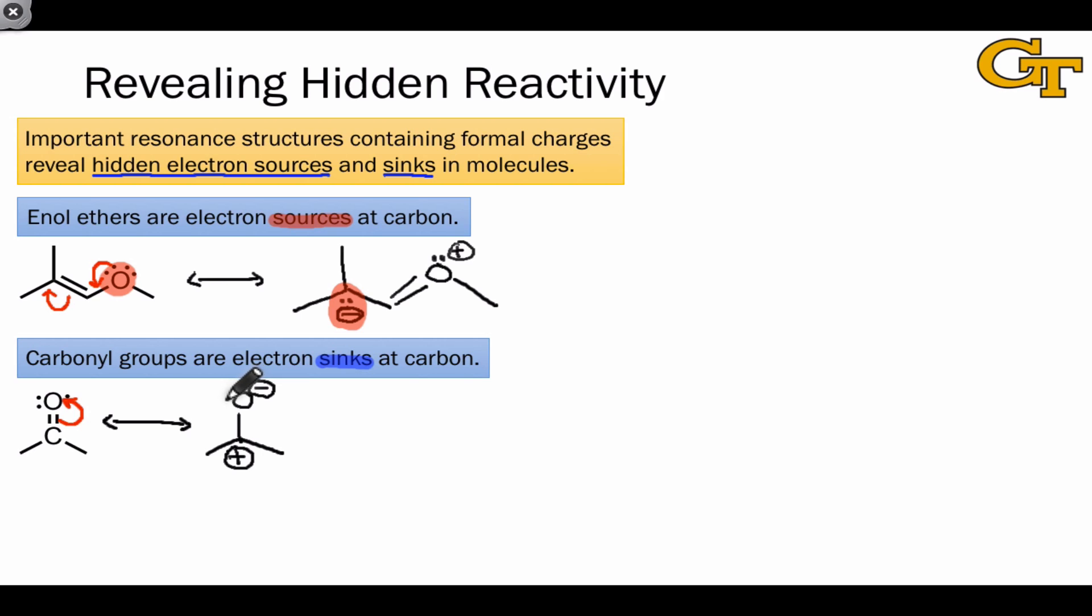When we do that in the carbonyl case, the resulting resonance structure contains a carbon atom with a formal positive charge indicating the presence of a good electron sink. Notice that without drawing these two resonance structures, we wouldn't really be able to tell from the neutral resonance forms alone where the electron sources and sinks were. But the resonance structures allow us to draw useful conclusions.